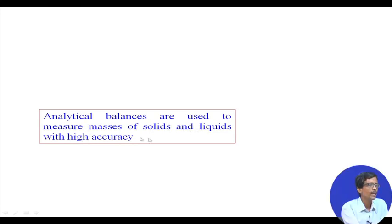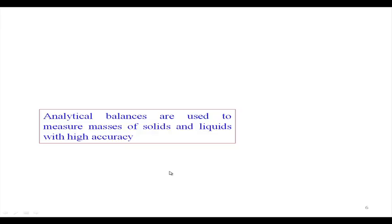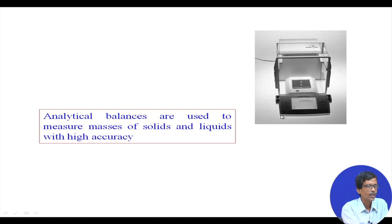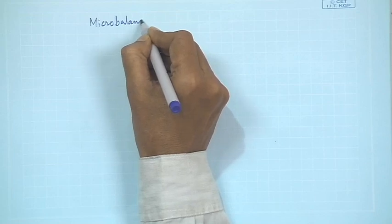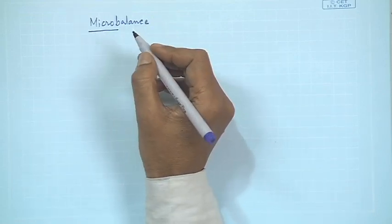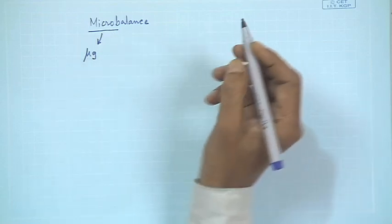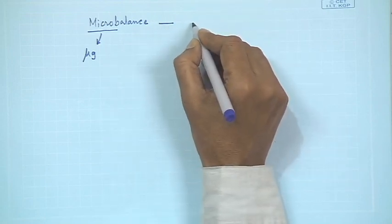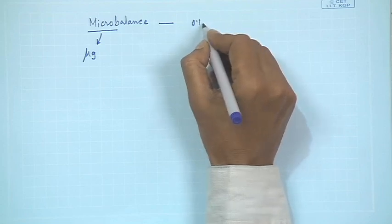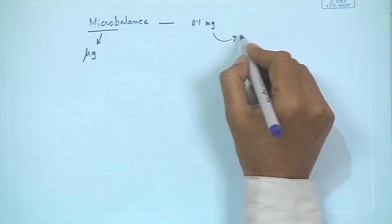There are different types of analytical balances available. Depending upon these balances, if we are able to measure something from some amount of milligram up to several grams, we can use a typical analytical balance — those balances are known as a microbalance. A microbalance can go for a weight which is in micrograms, and can be used for weighing mass from 0.1 milligram up to 200 grams.